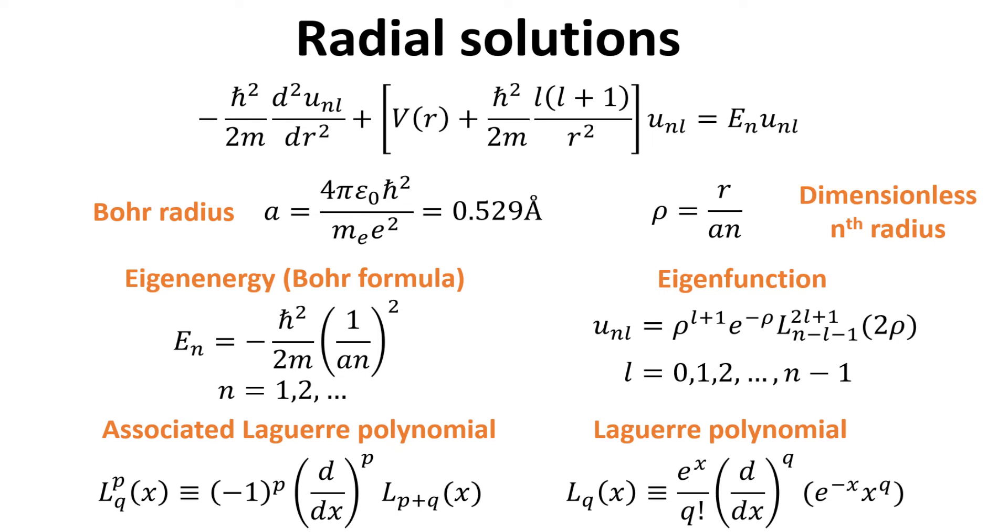The eigenenergy En is given as follows, where n is an integer that runs from 1, 2, and so on. This is also known as the Bohr formula, first proposed by Niels Bohr before quantum mechanics or Schrödinger equation even existed.